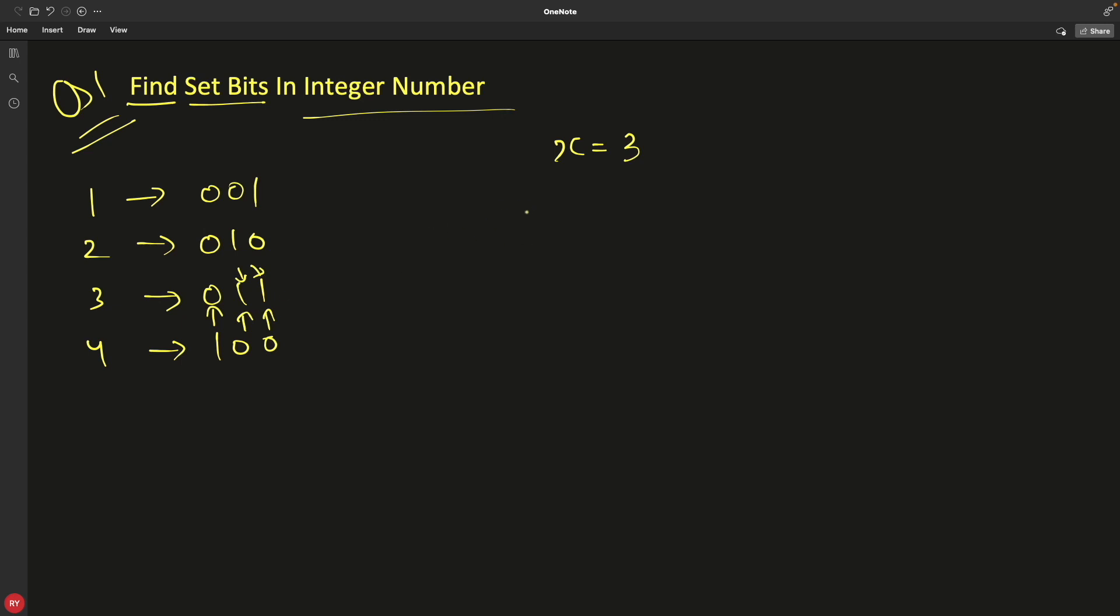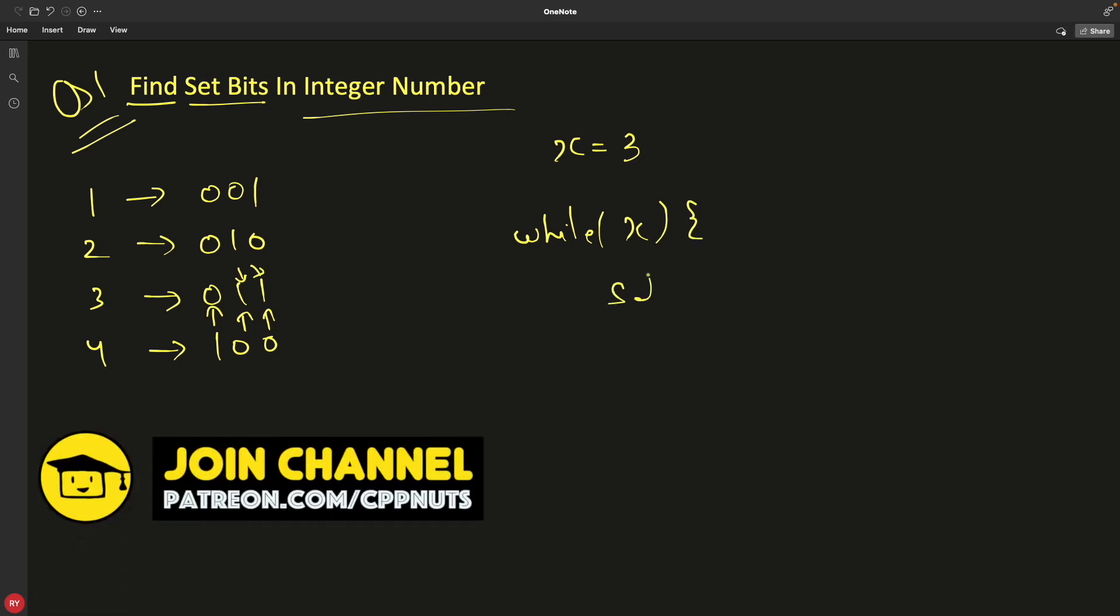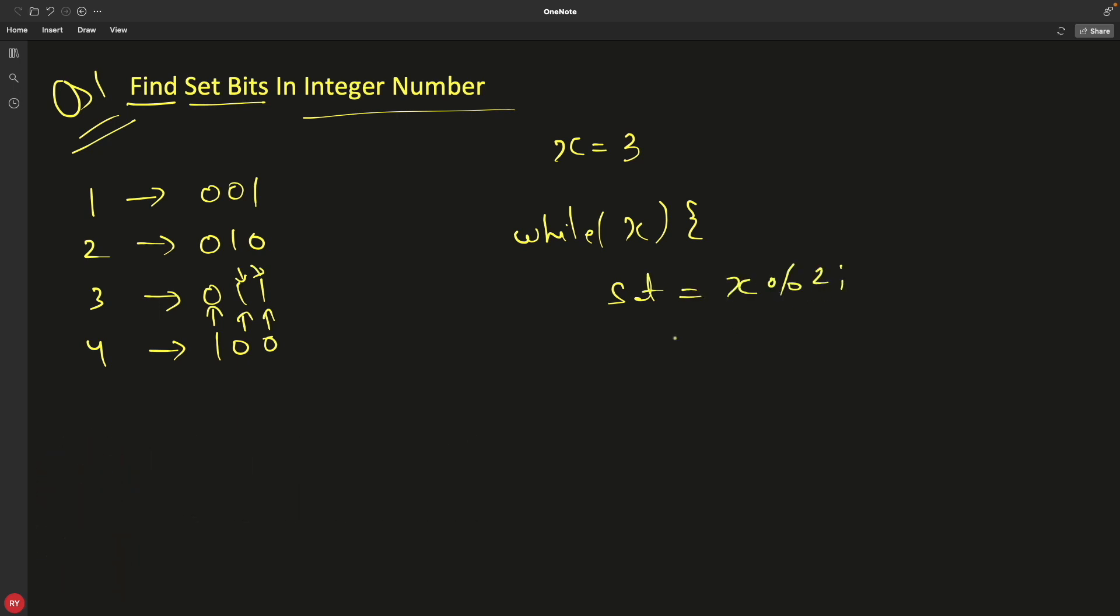So the traditional way is I'll have a while loop till x and I can have a count or a variable set is equal to x modulo division 2. And now if I'll do this, if set is there, then count plus plus and x divided by 2. So this is going to be a traditional way.